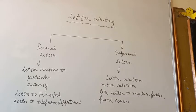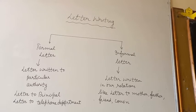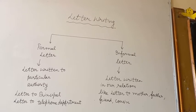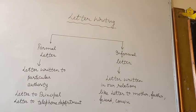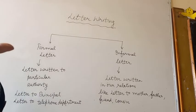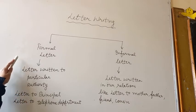For example, if you want to take a leave from school, then who has the authority to sanction that leave? The principal. So if you want to take leave, you will write an application to the principal to sanction your leave. That is a formal letter.